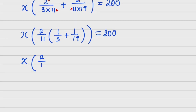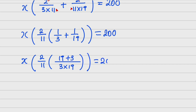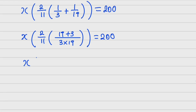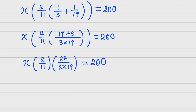I work out the bracket (1/3 + 1/19): the LCM is 3×19, giving (19+3) = 22 over 3×19. So I have x times 2/11 times 22/(3×19) equals 200. The 11 cancels with 22, leaving 2, so I get x times 4/(3×19) equals 200.